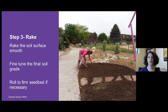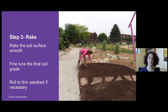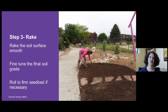Step three is to rake the surface of the soil nice and smooth. This is your opportunity to fine-tune the final soil grade — make sure the soil level next to sidewalks, edging, and pathways is where you want it. Once raked, if the soil is very light and fluffy, use a roller to firm the seed bed up. If it's not extremely fluffy, you can go ahead and seed or plant.